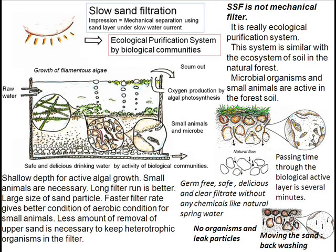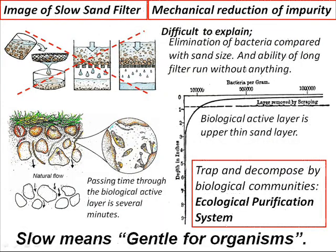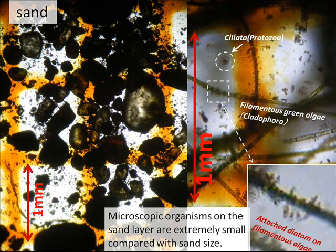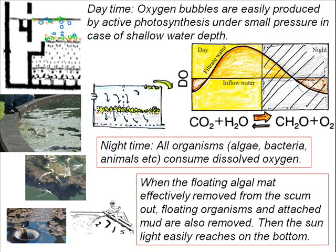Microbial organisms and small animals are active in forest soil. Shallow depth is better. The imagined slow sand filter as a mechanical reduction of impurity is incorrect — 'slow' means gentle for organisms. Mud and organisms can be observed only in the sand layer. Mud does not enter the sand layer even with large sand size, because microscopic organisms on the sand layer are extremely small compared with the sand size. We have to take care about too much floating algal mud in a shallow filter.